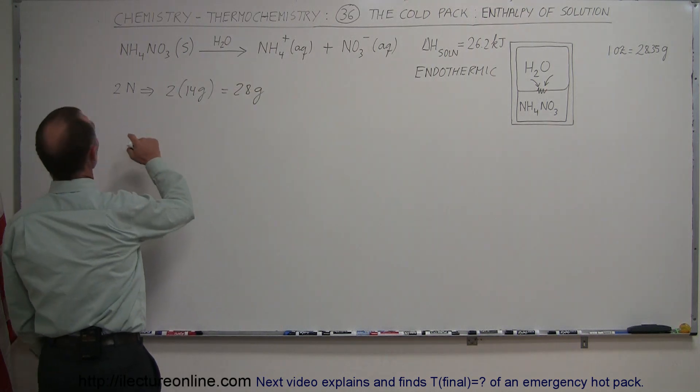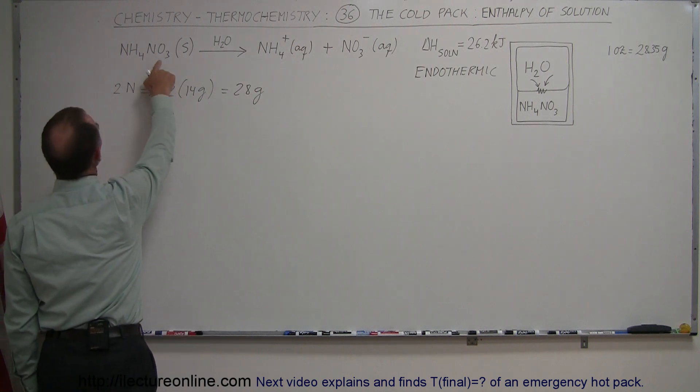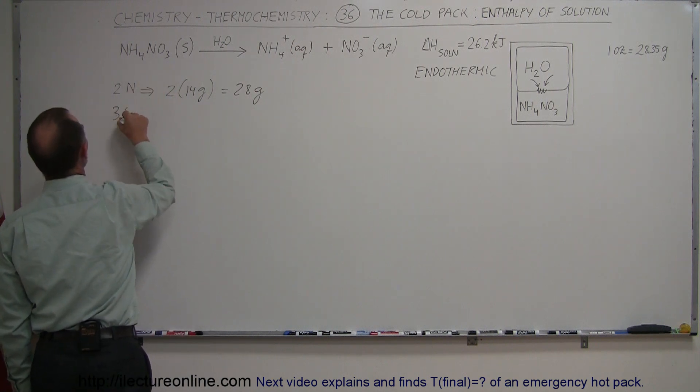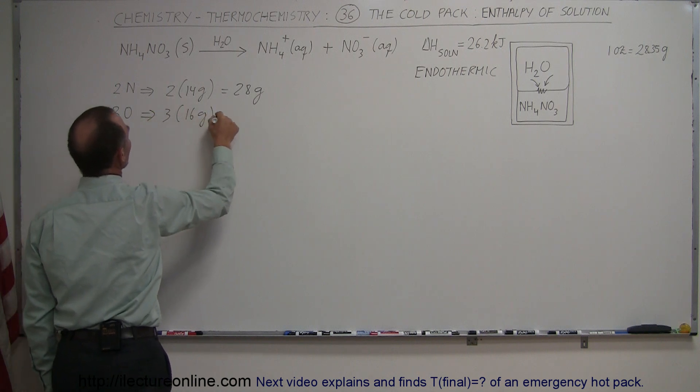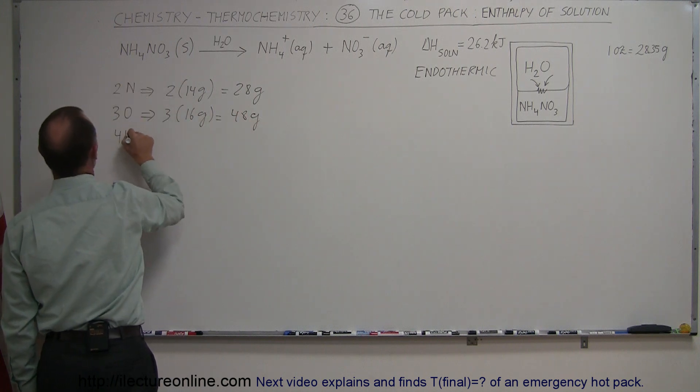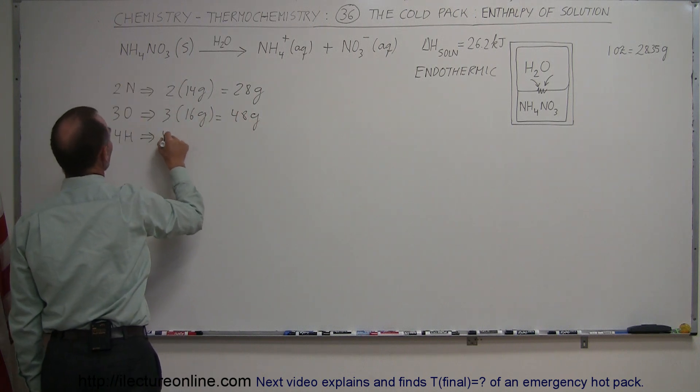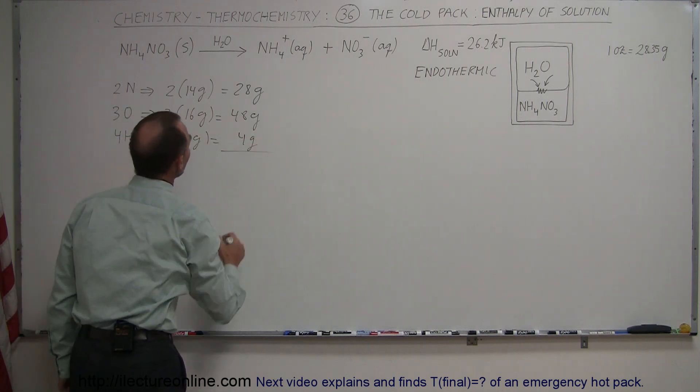So that gives us 28 grams for the nitrogen. Now we have three oxygen molecules, so three oxygens amounts to three times 16 grams per mole, which is equal to 48 grams. And then finally we have four hydrogens, and that amounts to four times one gram, which is equal to four grams.